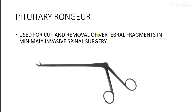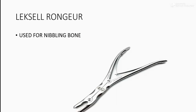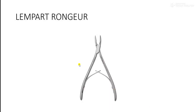Next is the laminectomy rongeur, which as discussed is used for nibbling out bone from the vertebral column. Next is the Leksell rongeur, also used for nibbling bone. The Lampard rongeur is another type — many varieties of rongeurs are used in neurosurgical procedures.